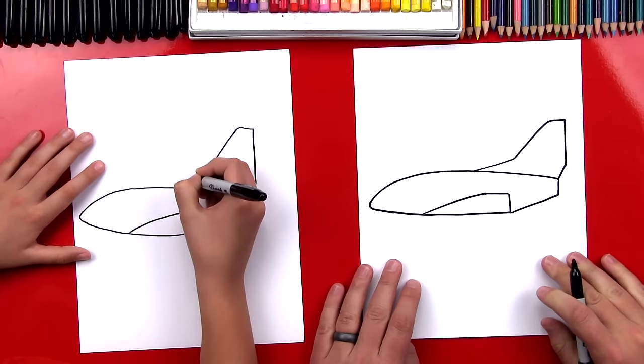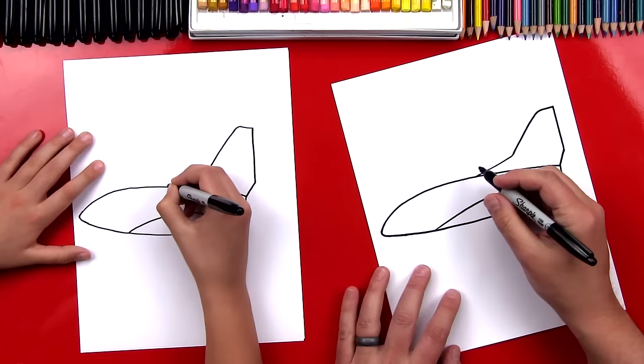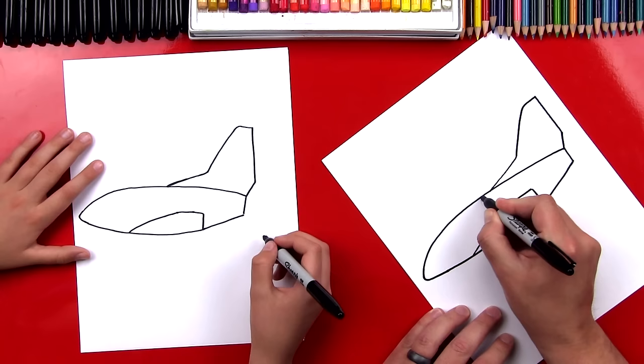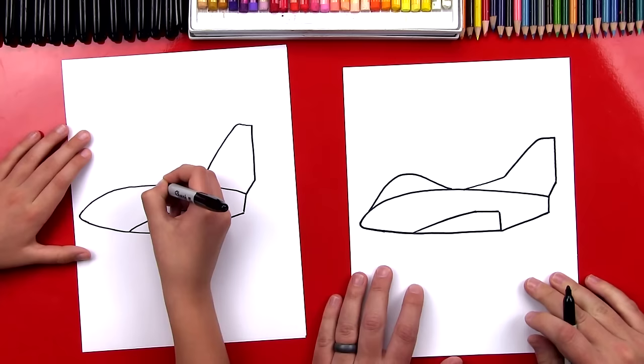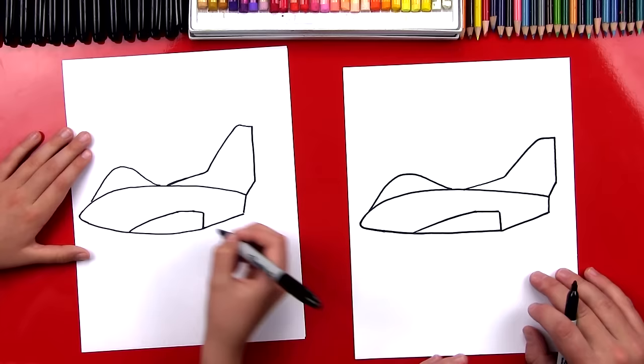Okay, now we're gonna curve right here into the body. Yeah. Now let's draw the cockpit and this is where the pilot sits and drives the plane. So we're gonna draw a bubble that's up here. It's gonna come up, curve, and then back down. And it's kind of cartoony but that's okay. Yeah, it's a little easier, still gonna look awesome.